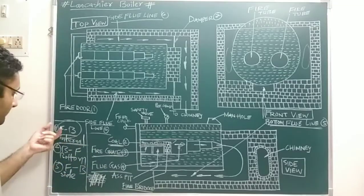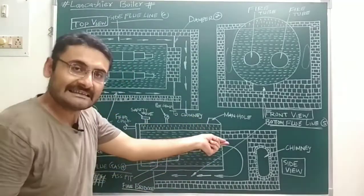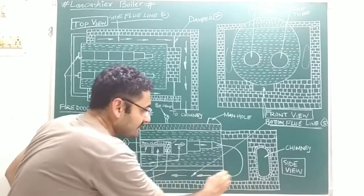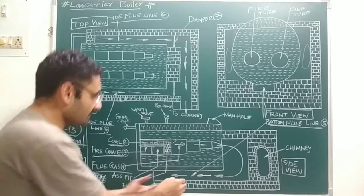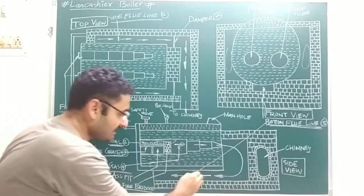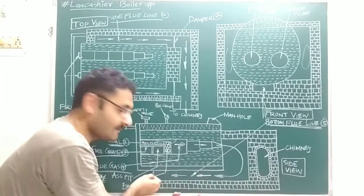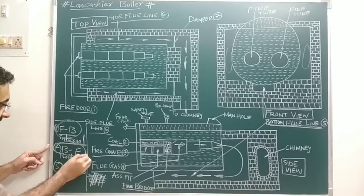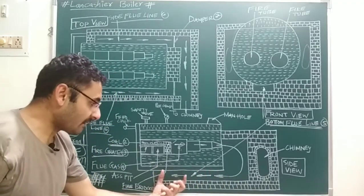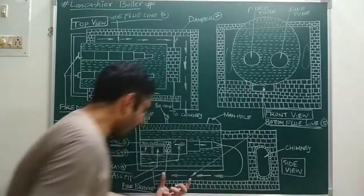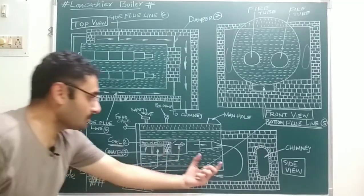As flue gases move from front to back, the diameter of the tube decreases toward the back end, so the velocity of the flue gas increases. Due to this increased velocity, the flue gas is reflected and enters into the bottom flue line, traveling from back to front. Hot flue gases in the bottom flue line heat the bottom portion of the shell.